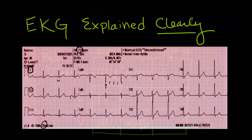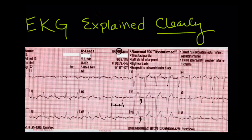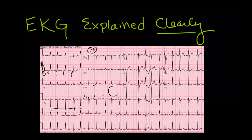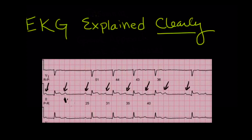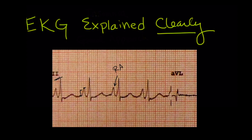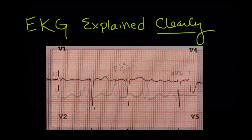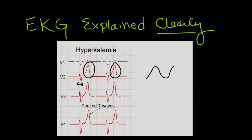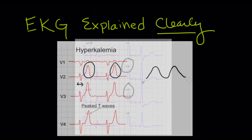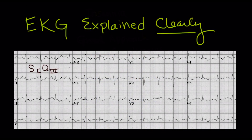We'll go through a normal EKG first and then on to a variety of abnormal EKGs like sinus tachycardia, atrial fibrillation, multifocal atrial tachycardia, first, second, and third degree heart blocks, atrial enlargement, ventricular hypertrophies, hyperkalemia, rare anomalies, and many many more abnormal EKGs.